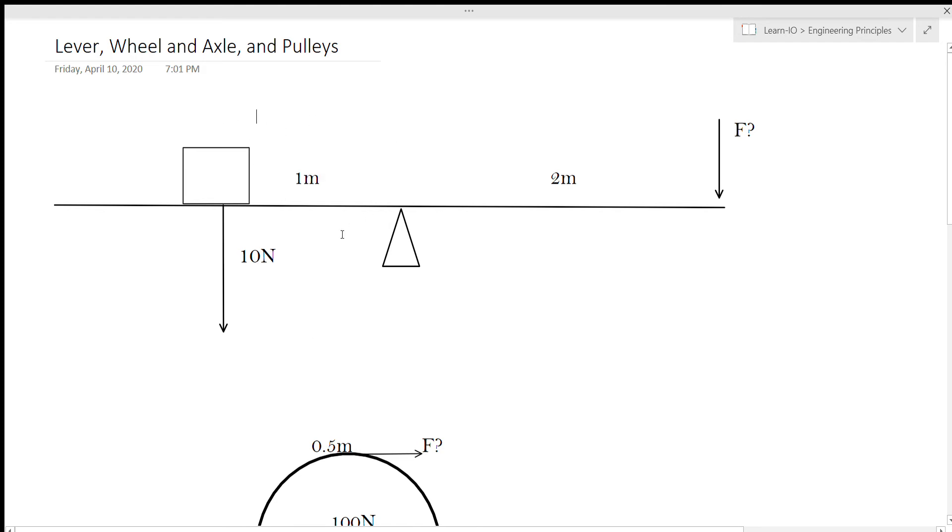Its force is 10 newtons and the distance is 1 meter. If tau or torque equals r cross f, we know that the force is perpendicular so that works out. R is 1 meter times 10 newtons gives us a torque of 10 newton meters.